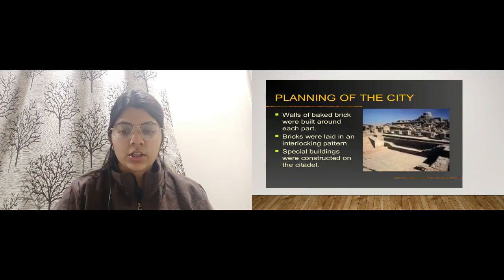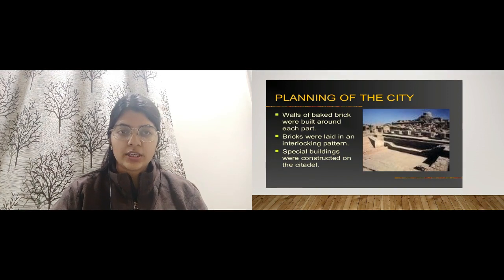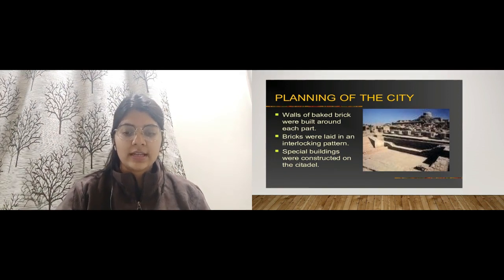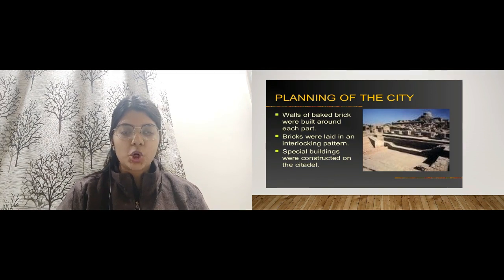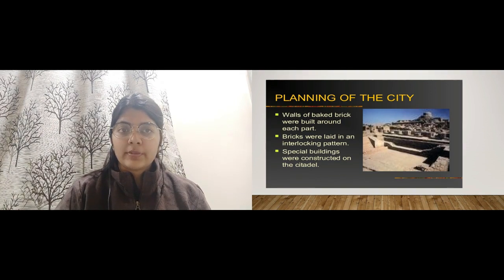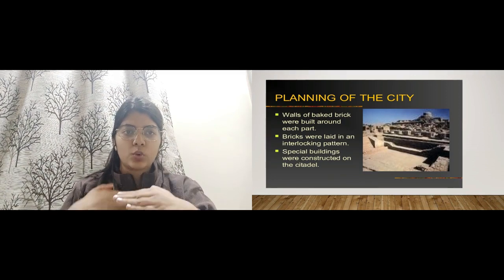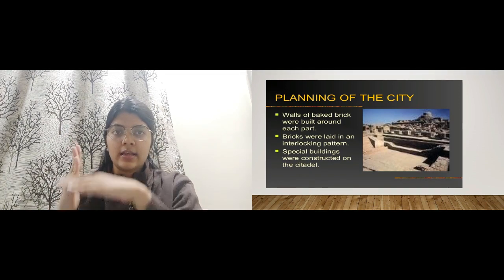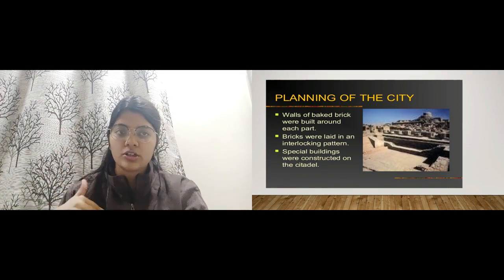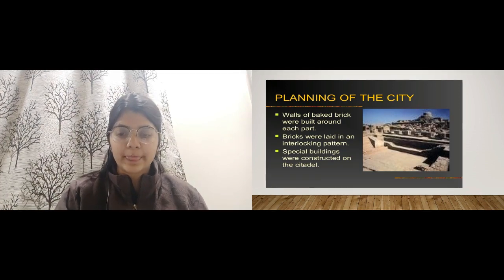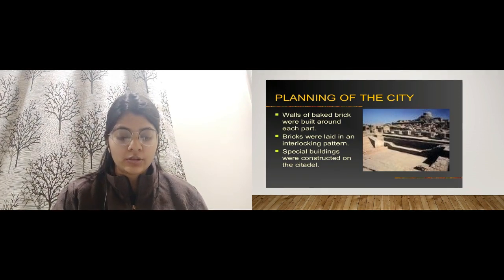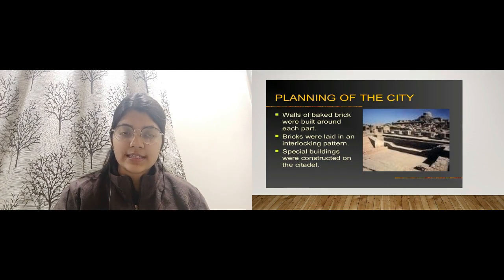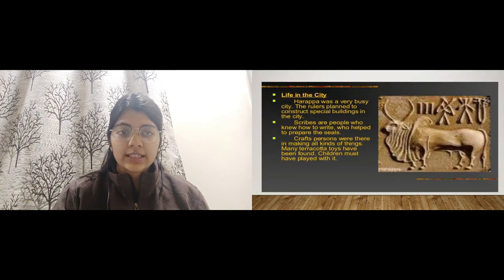Regarding the planning of the city, walls of brick were built around each part. As you can see in the picture, what is special about these bricks is that they were laid in an interlocking pattern — horizontal, then vertical, then horizontal — unlike today where bricks are simply stacked one above another. Special buildings were constructed on the citadel.